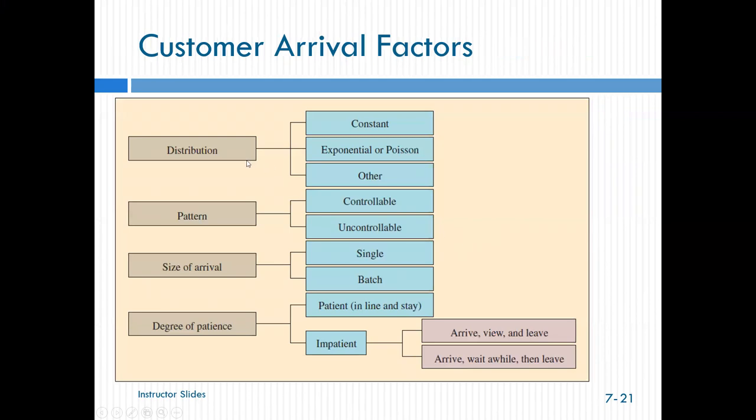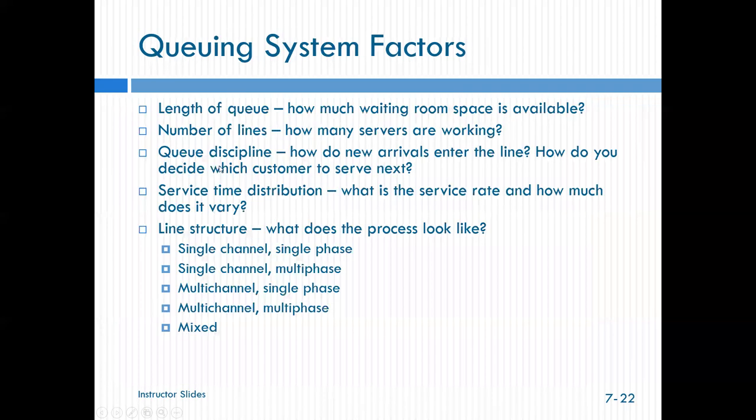Customer arrival factors. We have to be concerned with the distribution. Is it constant, exponential or Poisson or some other type? Is the pattern of customer arrivals controllable or uncontrollable? Do they arrive as a single unit or a batch? And what's their degree of patience? Do they get in line and stay? Are they impatient? They arrive and leave, which is called balking. Or do they arrive, wait a while and then leave, which is called reneging. So that's a pretty good summary of our customer arrival factors.